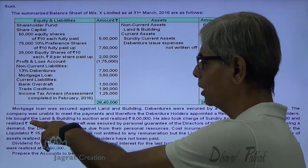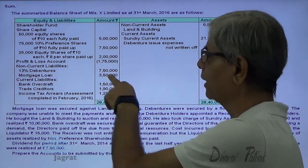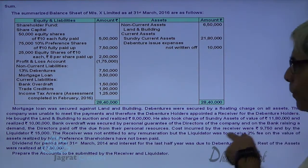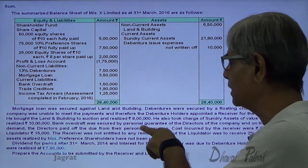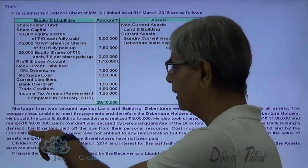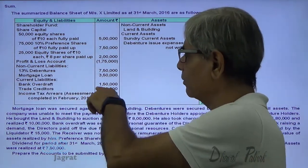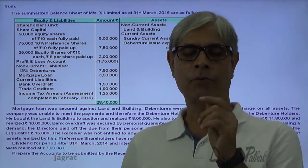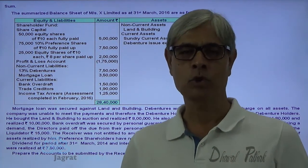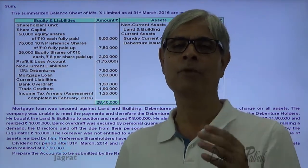The receiver brought land and building to auction and realized 8 lakhs. From 8 lakhs, he has to pay the mortgage loan of 3 lakhs 50,000. He also took charge of sundry assets valued at 11 lakhs and realized 10 lakhs. The bank overdraft was secured by the personal guarantee of the director of the company, and the bank raised the demand, so the directors paid off the dues from their personal resources.